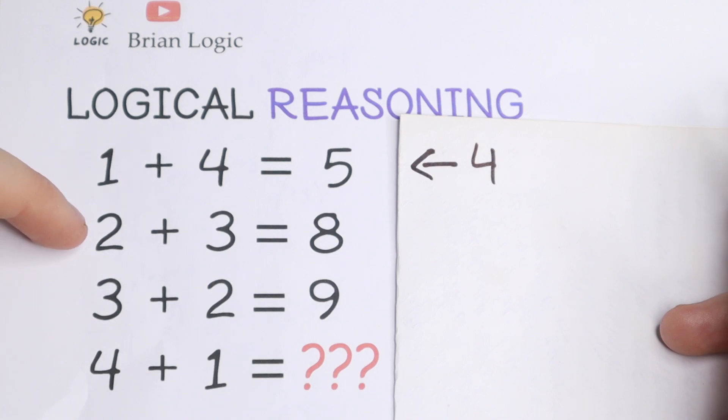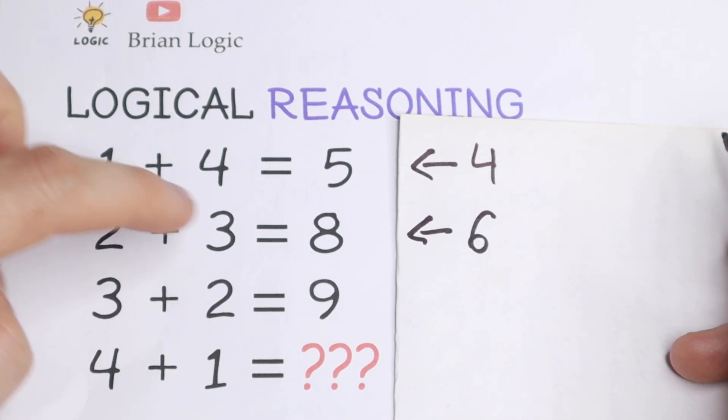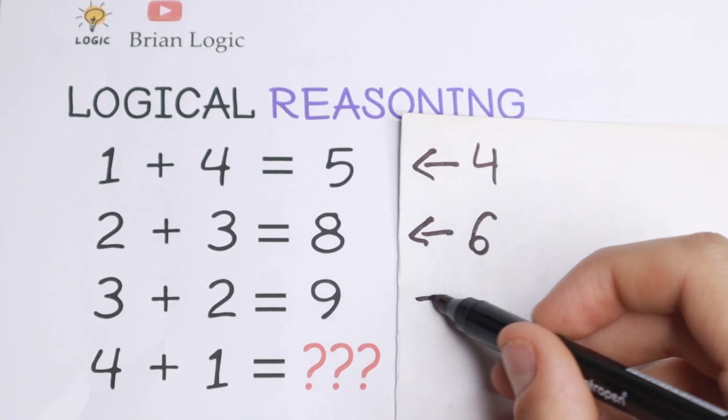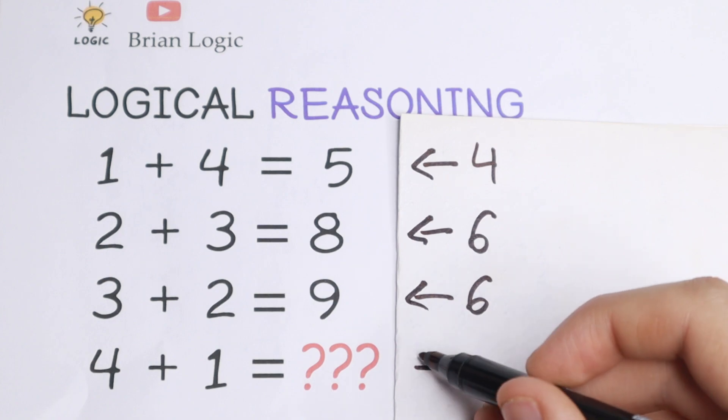Take a look, if we multiply 2 times 3, we will have 6. So we will have 6 if we multiply the first two digits. 3 times 2, we will have 6 as well. So as a result, in the third row we will have 6. And in the last row, 4 times 1, we will have 4.